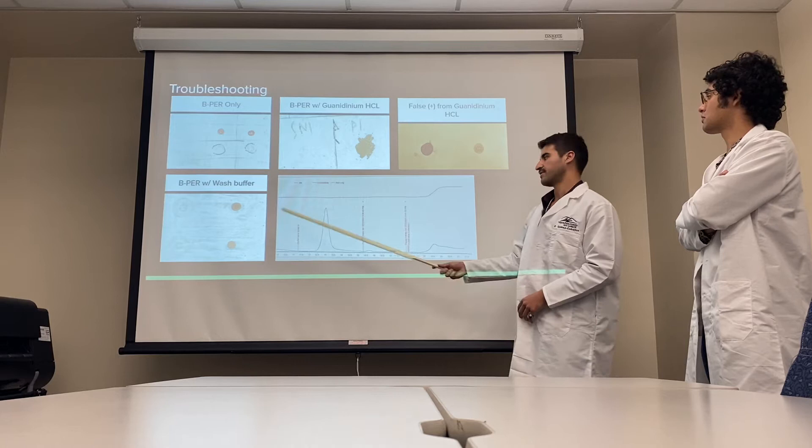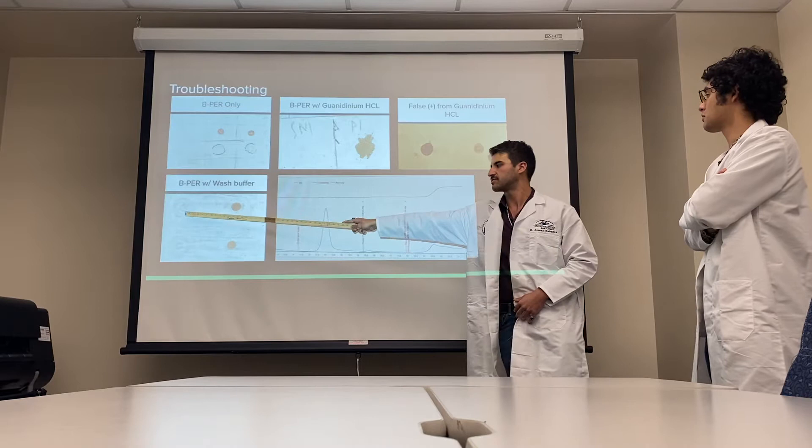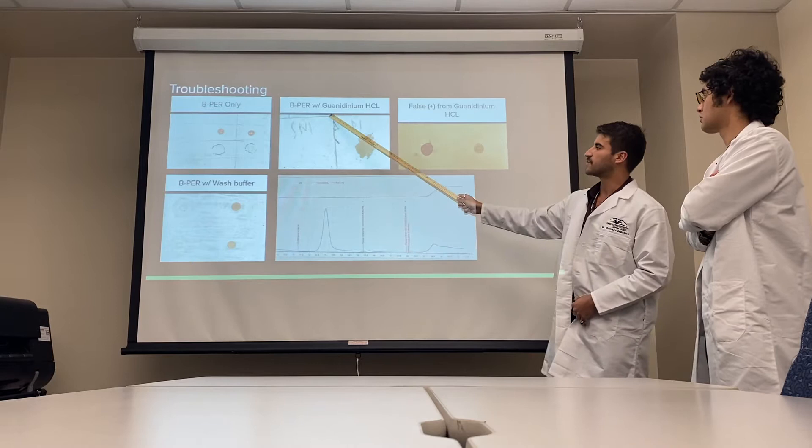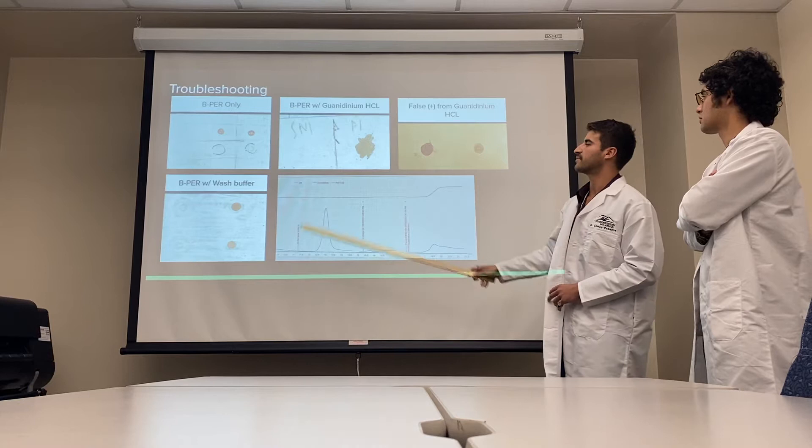We then tried different things, like putting it in the wash buffer — a phosphate buffer — to see if it would yield any different results. But the supernatant was still very clear and the cell pellet still very dark. We tried guanidinium, thinking that a denaturing agent would be enough to do the job, but we had the same problem: nothing in the supernatant and all in the cell pellet.